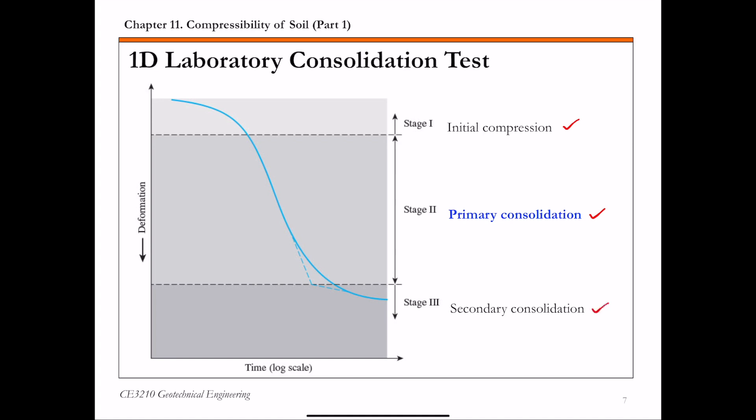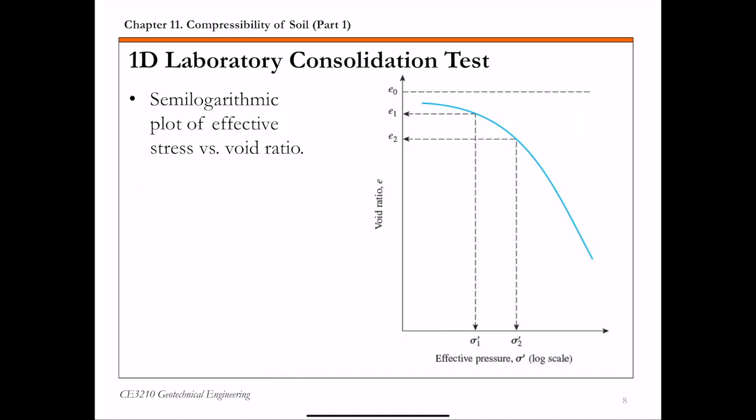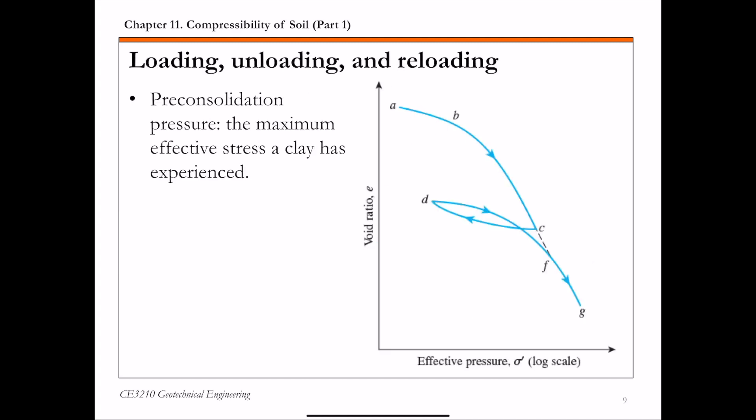Results of the 1D consolidation test are typically reported in terms of a semi-log plot that shows the relationship between deformation and load during the test. So for deformation, we quantify the deformation in terms of the void ratio change in the specimen. And the load is expressed in terms of the effective stress in the specimen. And it's plotted in a semi-log scale.